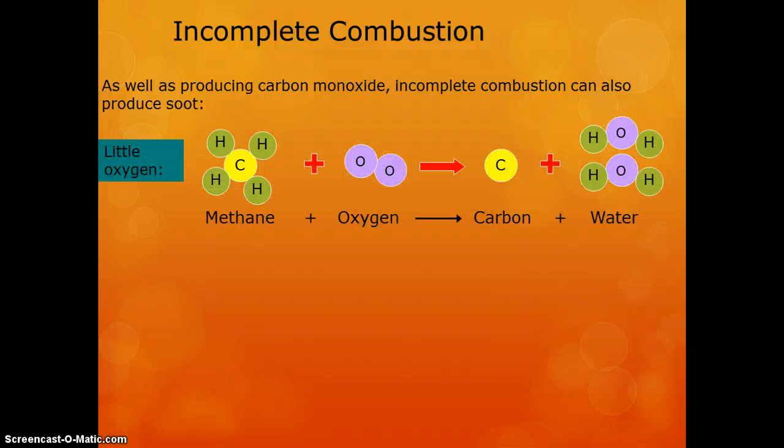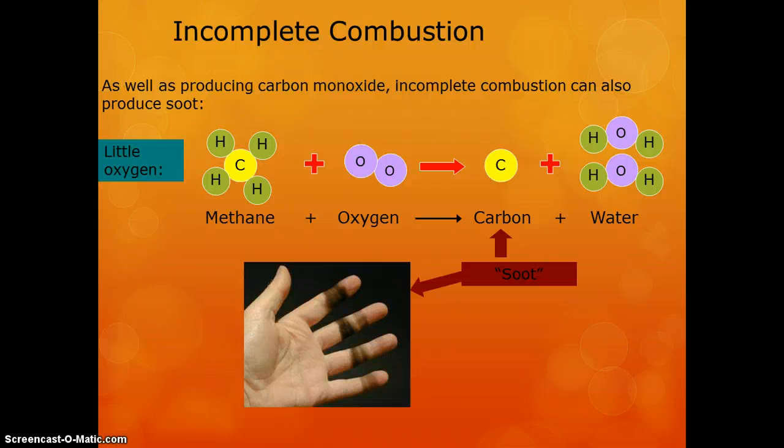So, as I've said, incomplete combustion can make carbon monoxide, but it can also make just carbon on its own. Now, when it's just carbon on its own, it's soot. So when you get the black residue on the outside of things when you've been burning like on your beakers when you use the wrong flame, that's just soot and that's just the carbon that's left over. And that's one of the ways you can tell that it's incomplete combustion.